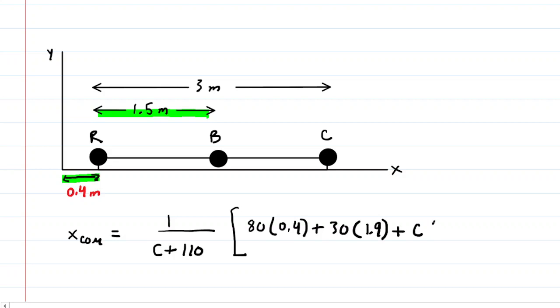And then we have Carmelita's mass multiplied by her x-coordinate. Again, you have to be careful because you have to take the 0.4 meters and add that to the 3 meters to locate where Carmelita is sitting, and that would be 3.4 meters.